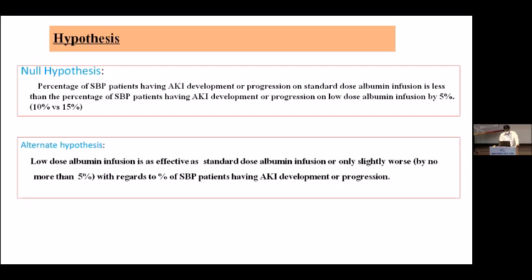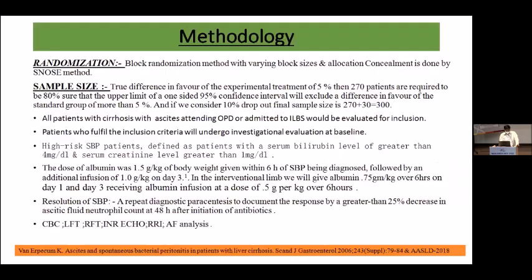Block randomization method with varying block sizes and allocation concealment based on the SNOSE method was used. The sample size is around 300, with 150 in each arm. All patients with cirrhosis with ascites attending OPD or IPD were admitted and evaluated for inclusion or exclusion criteria.